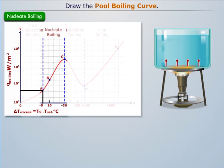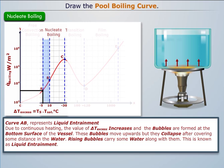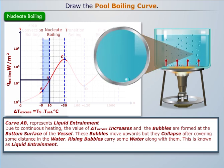Curve ABC represents the stage of nucleate boiling, which is divided into two parts: curve AB represents liquid entrainment and curve BC represents critical heat flux. Due to continuous heating, the value of Delta T excess increases and bubbles are formed at the bottom surface of the vessel. These bubbles move upwards and carry some water along with them, but they collapse after covering some distance in the water. This is known as liquid entrainment.